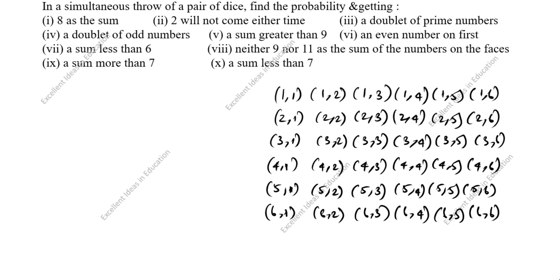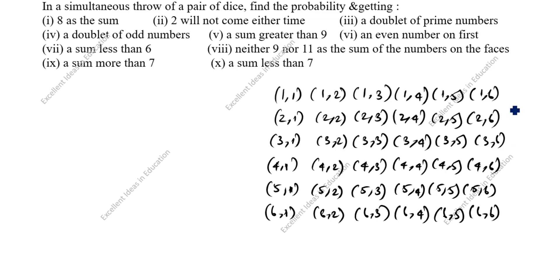Hi friends, welcome to my channel Excellent Ideas in Education. Today we are going to solve this probability problem. This is a board exam question: in a simultaneous throw of a pair of dice, find the probability. For a pair of dice, the outcomes go from (1,1), (1,2) ... up to (6,6). So the total number of possible outcomes is 36.